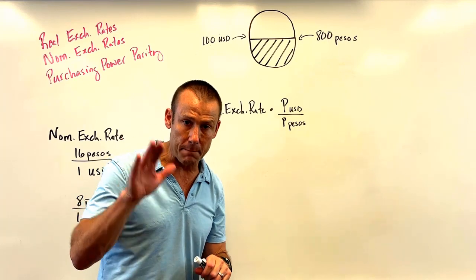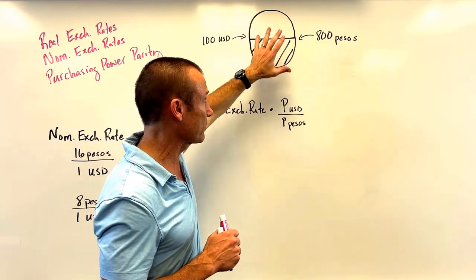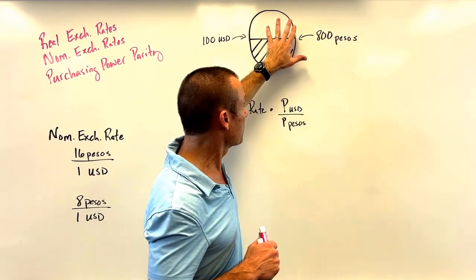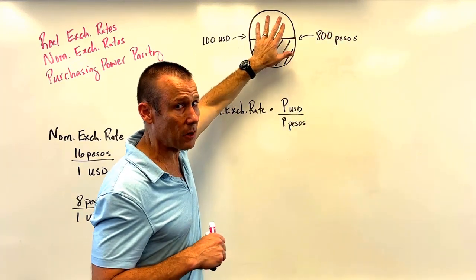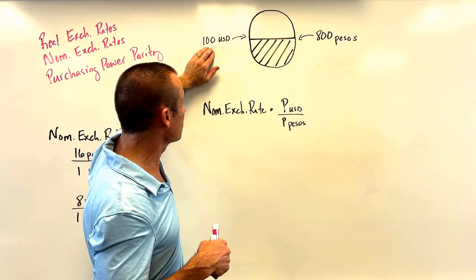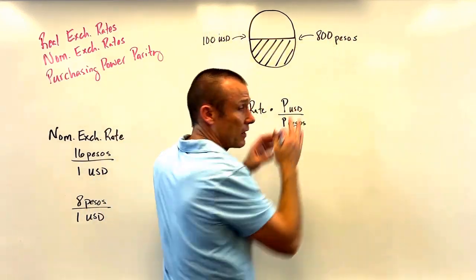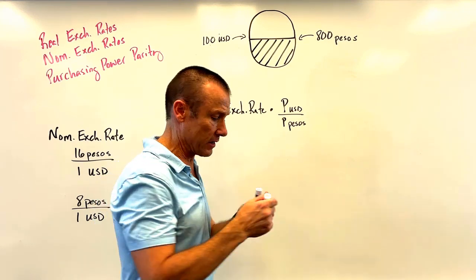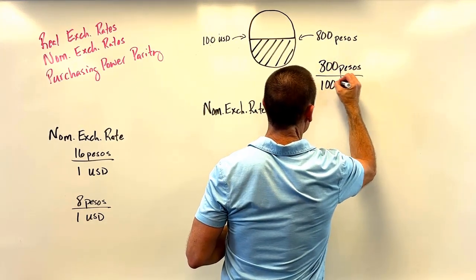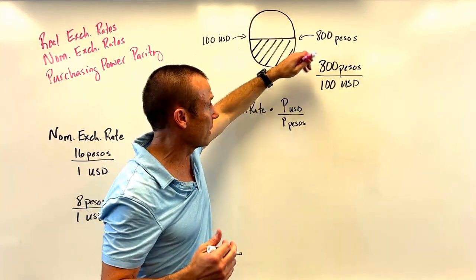To find the real exchange rate, you need the nominal exchange rate and the purchasing power parity exchange rate. The PPP exchange rate is a buying power equivalency rate. We take a market basket and price it in both countries. In Mexico, the market basket costs 800 pesos; the same market basket in the United States costs 100 USD. That's all we need to find the PPP exchange rate — we put 800 pesos over 100 USD.